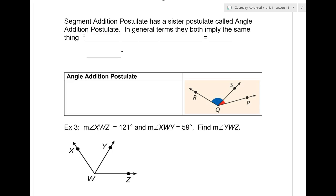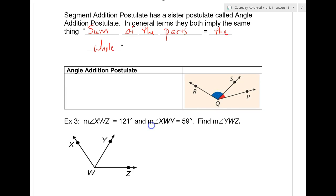Segment addition postulate. This is way back from Friday. So segment addition postulate has a sister postulate called the angle addition postulate. In general terms, they both imply the same thing. What general terms did we use for the segment addition postulate? We'd say what? Sum of the parts equal the whole. Guys, honestly, that's all you need to know. The sum of the parts equal the whole. The exact same thing happens with angles. Now you have to make sure you don't overlap parts. No overlapping parts with either line segments or angles. But the angle addition postulate is exactly the same way. If I ask you for either, you need to know sum of the parts equal the whole. But let's write the formal angle addition postulate down first.